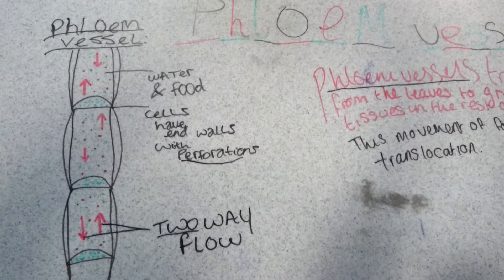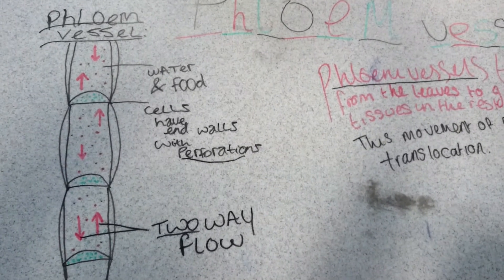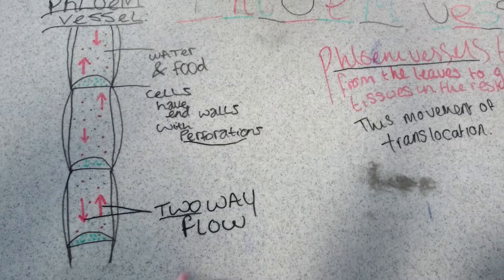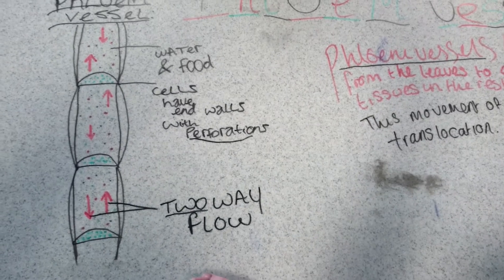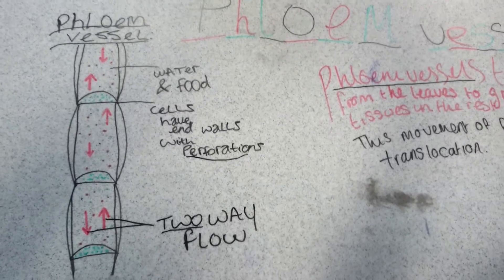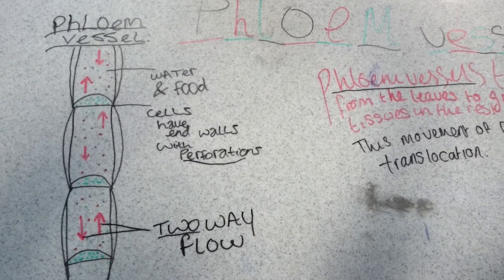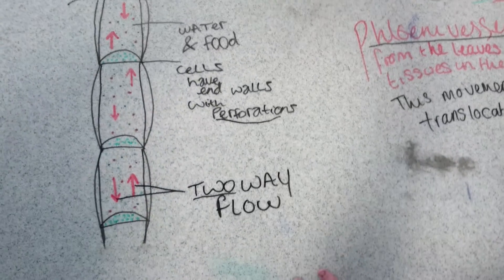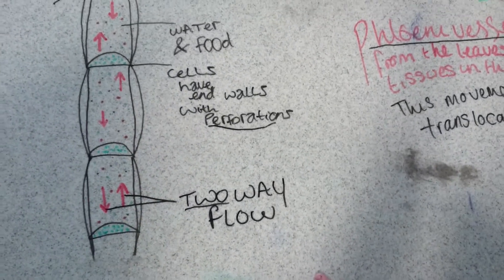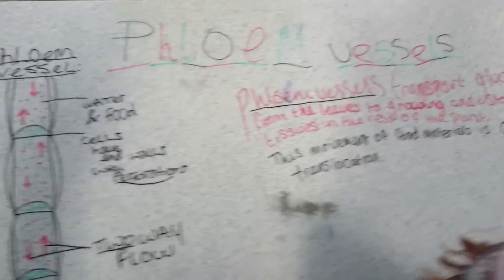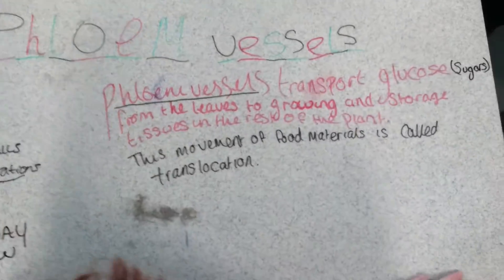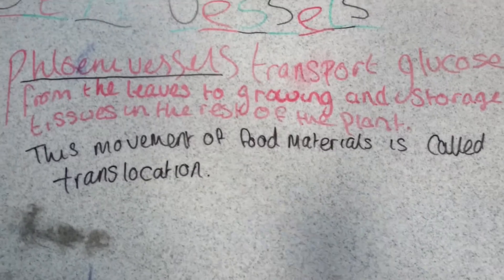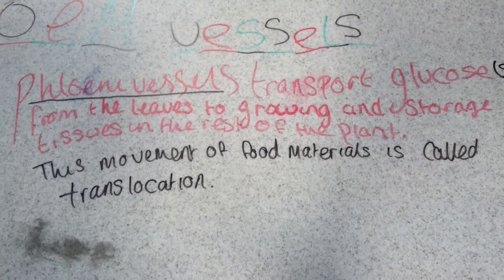This is a phloem vessel. Phloem vessels transport glucose and sugars from the leaves to growing and storage tissues in the rest of the plant.